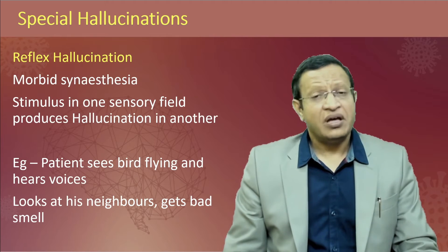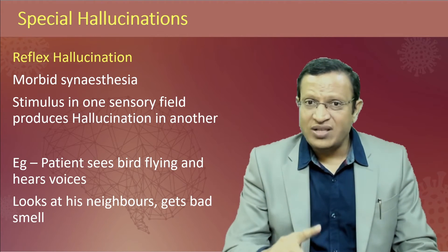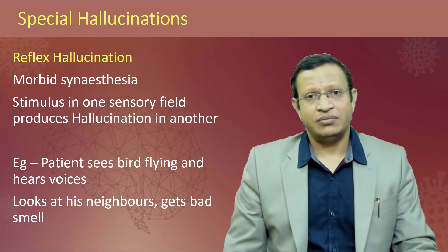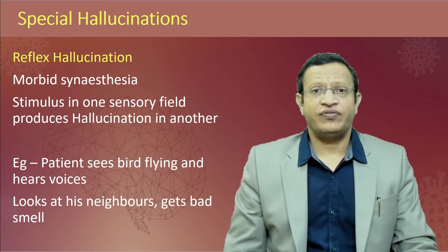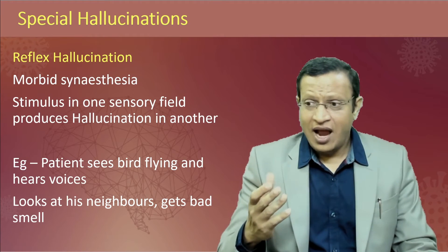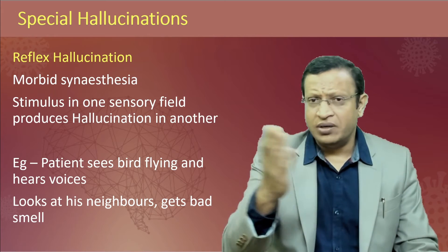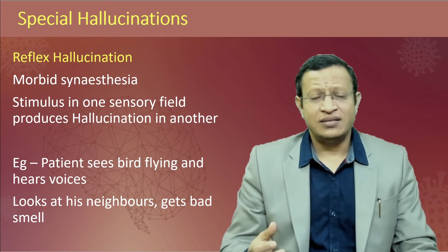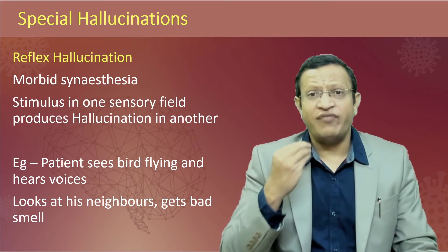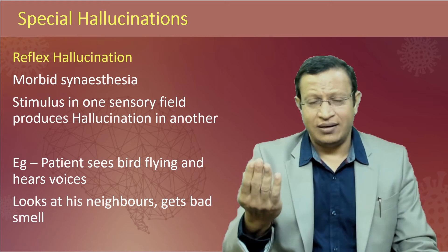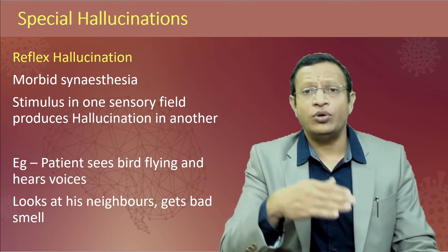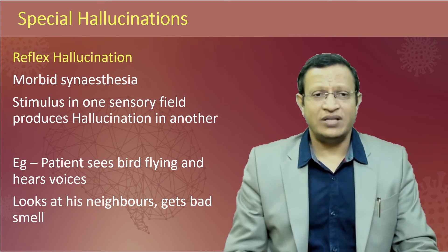Reflex hallucination is a morbid synesthesia — a stimulus in one sensory field produces a hallucination in another sensory field. This is commonly seen in cannabis intoxication, and sometimes in morbid schizophrenia or organic conditions like delirium. For example, the patient sees a bird flying and hears voices; or looking at his neighbor, he gets a bad smell — the visual stimulus of the neighbor produces an olfactory hallucination. Stimulus in one modality produces hallucination in another modality — this is reflex hallucination.